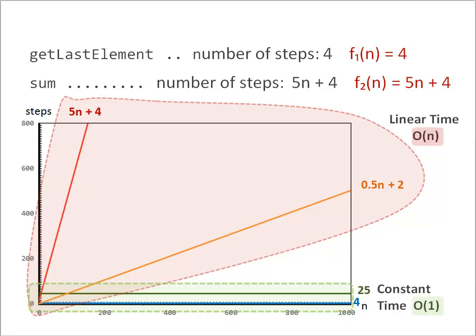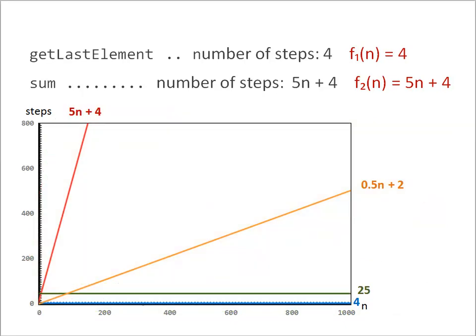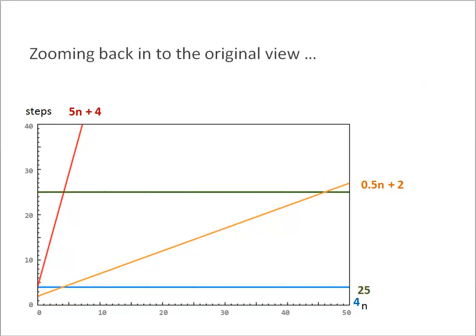At this point, we have discussed two categories, big O of 1 and big O of N. Let's look at a third category where the number of steps grows with the square of N. Let's get rid of the markup and zoom back in on the bottom left to the original detailed view.